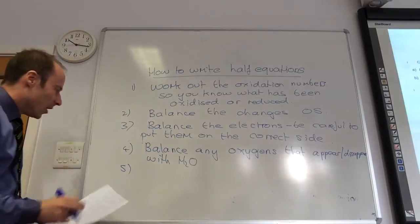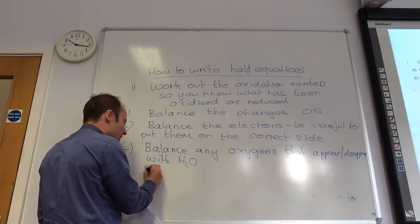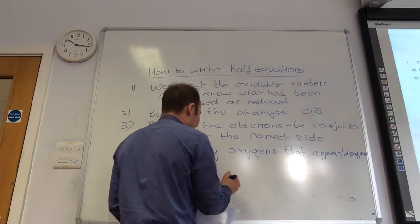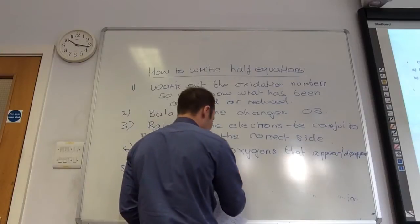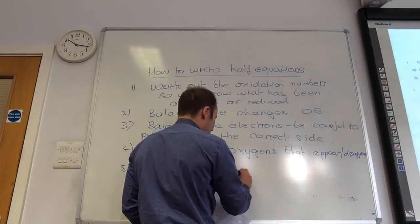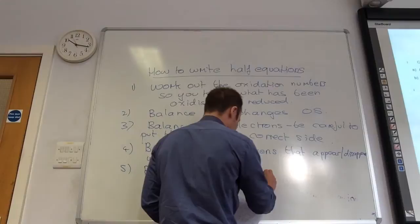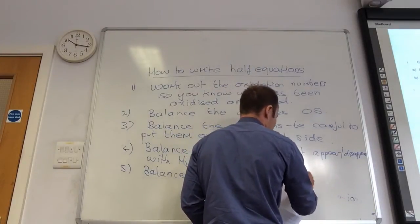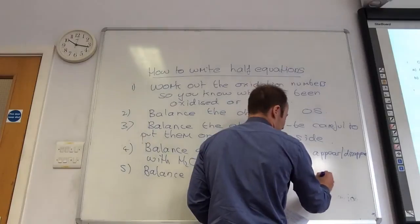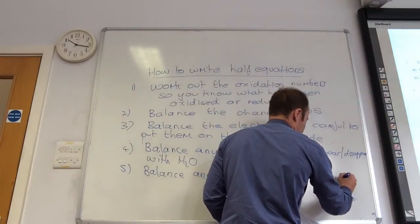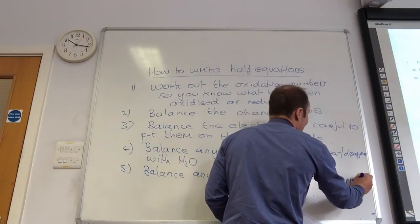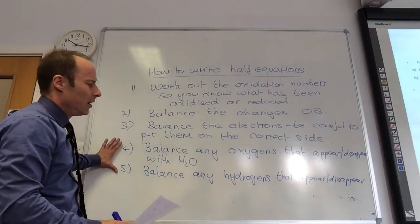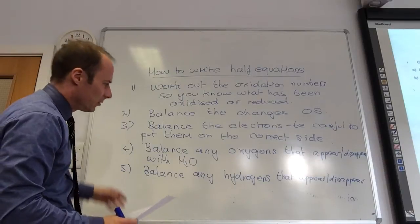Step five is sometimes you have stray hydrogens appearing. So, balance any hydrogens that appear or disappear. Sometimes you don't have to go through these steps because sometimes you won't have this happening.